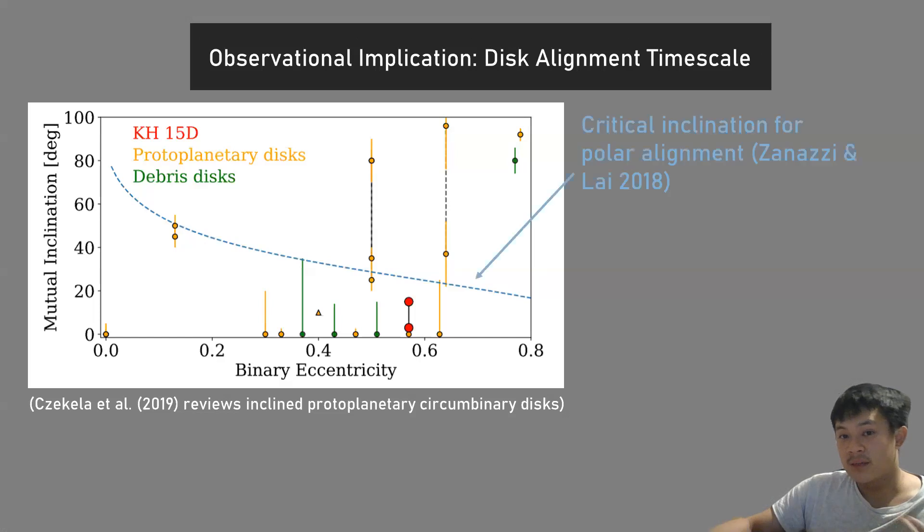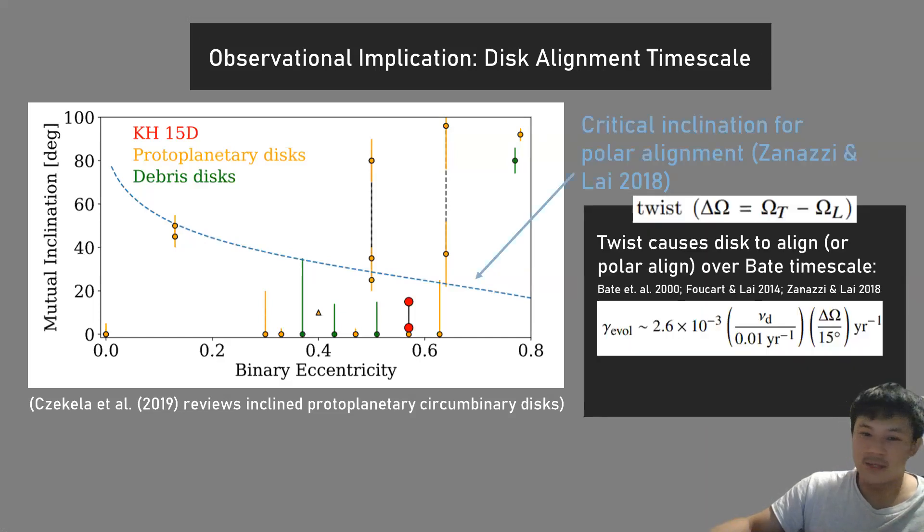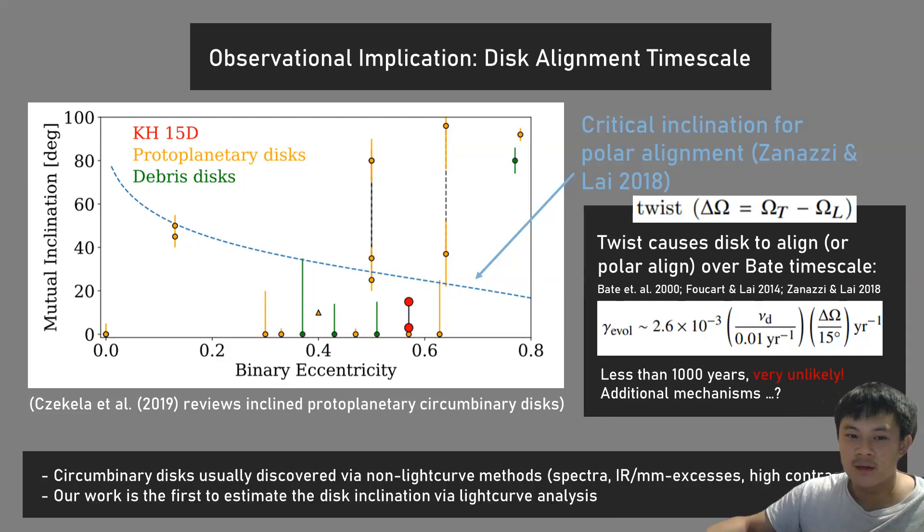The observational implications—this is my final slide—the disk alignment timescale we calculate is about 1,000 years using the Bate timescale. It's very unlikely this disk is actually 1,000 years old, so there must be additional mechanisms supporting the disk inclination, but it's not particularly clear at this moment. Further work needs to be done. Finally, circumbinary disks are usually discovered by non-light curve methods like spectra or IR, but our work is unique as the first to estimate disk inclination via light curve analysis. It provides an avenue for future work in discovering more circumbinary disks using this new method, which will be really exciting. Thank you.